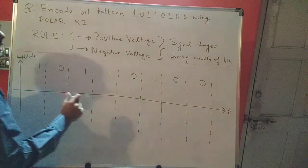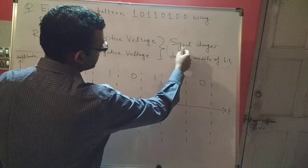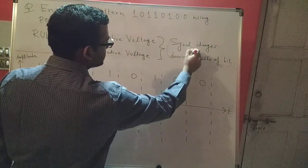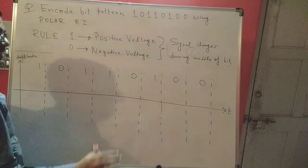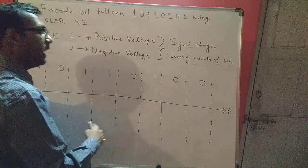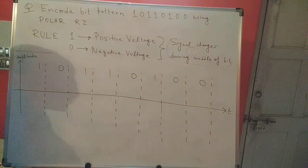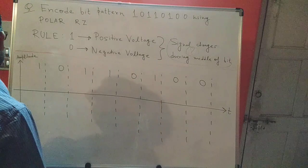But what we'll see here for the very first time is the signal changing during the middle of the bit. Now the question is why does this happen? This mainly happens to ensure synchronization between the sender and the receiver. Anyway we'll not get into the technicalities of synchronization. Maybe I'll discuss that in some later video of mine.